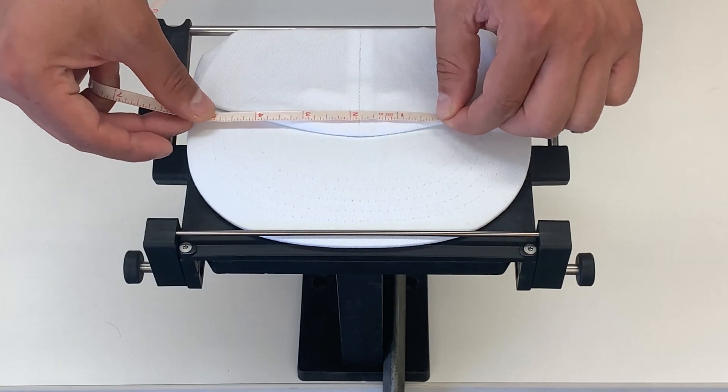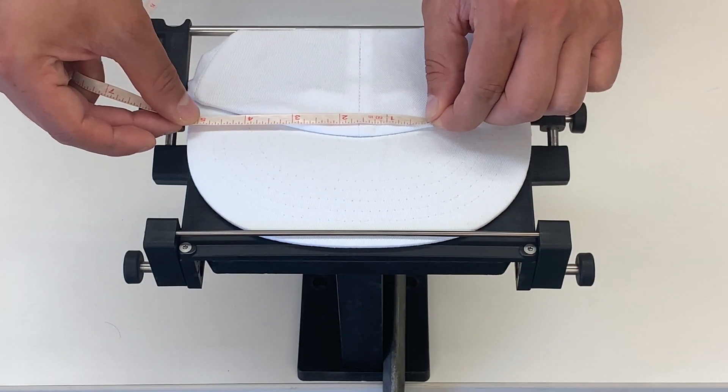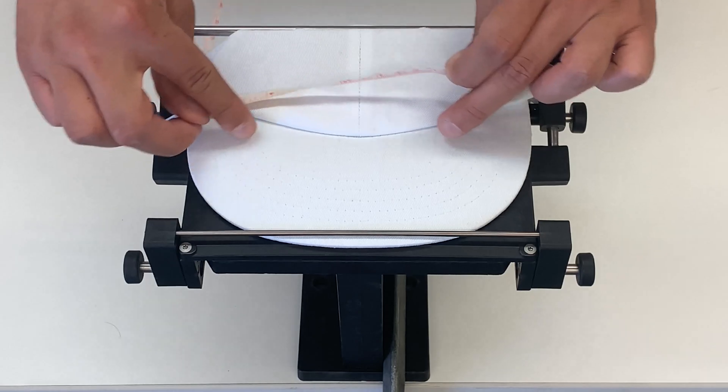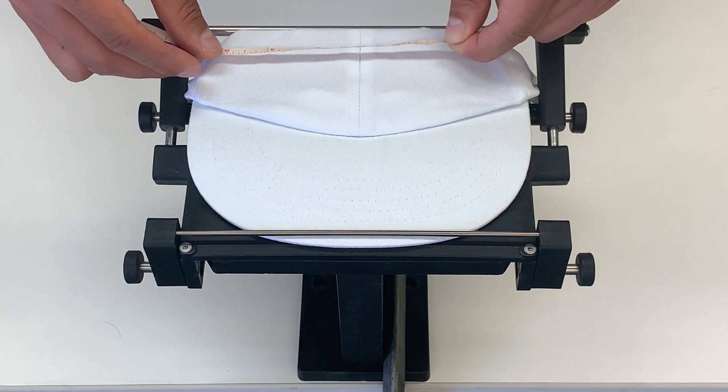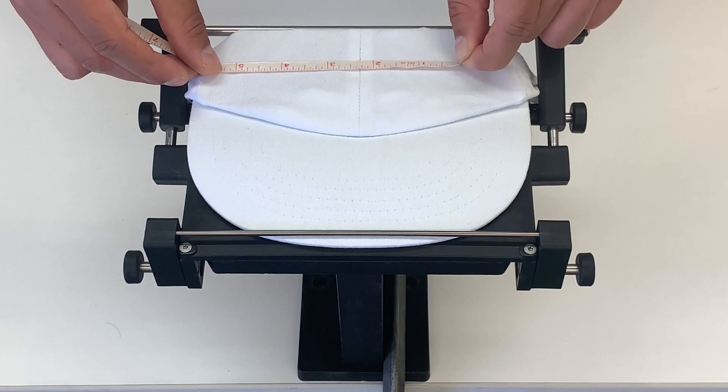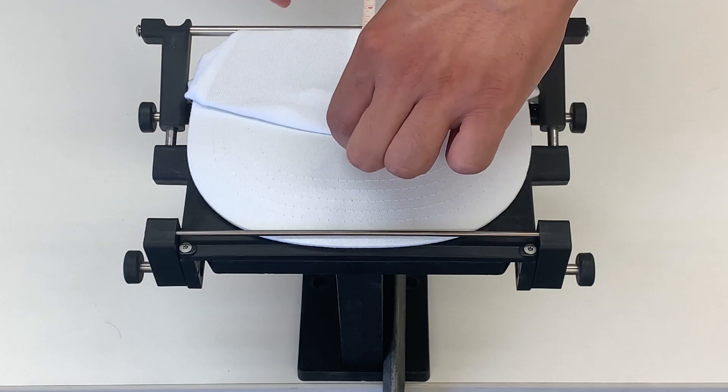Now keep in mind if you're starting down at the base, anything past three inches is going to start spilling over into the bill. You'll get the hang of it as soon as you start printing, but typically we recommend 4.5 to 5 inches wide depending on how tall your artwork is.